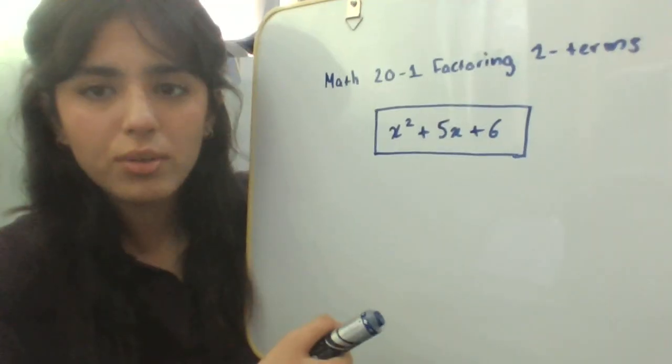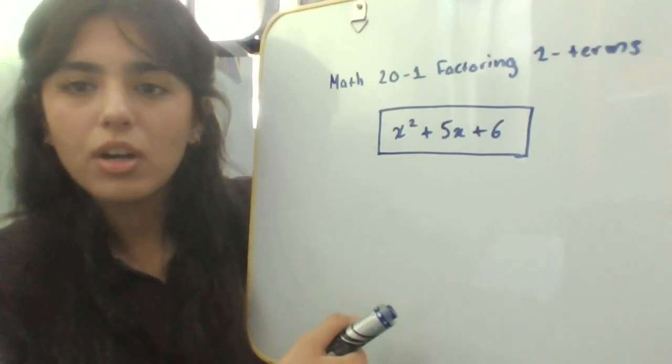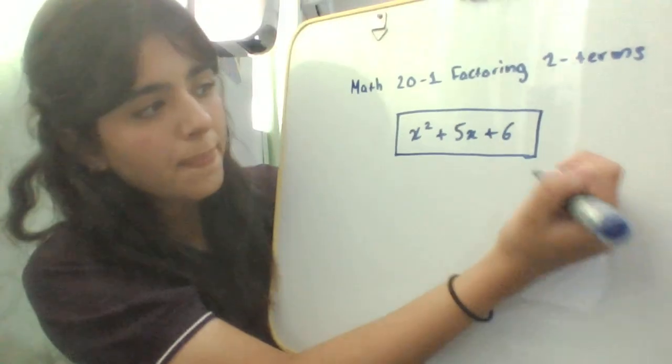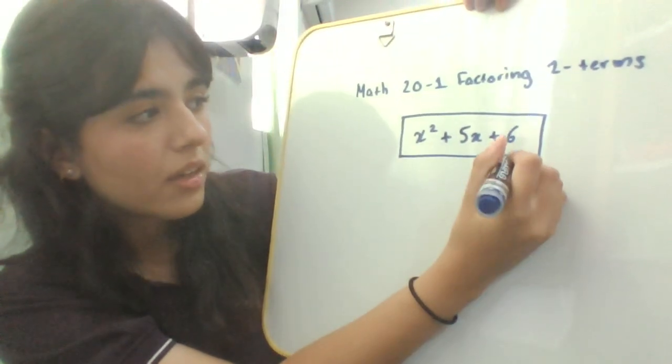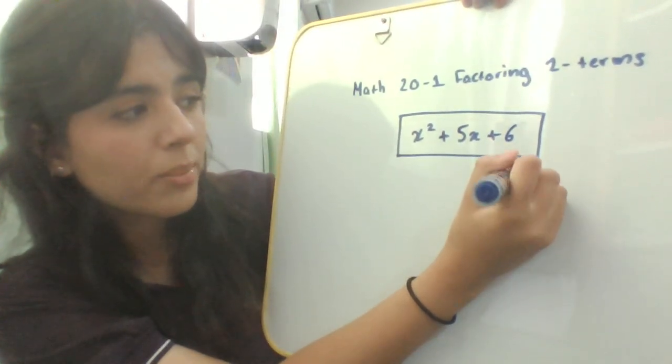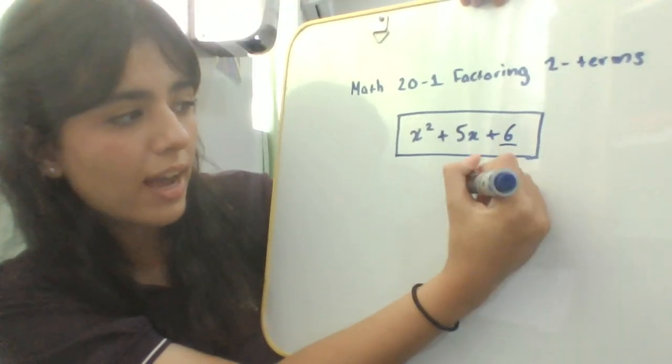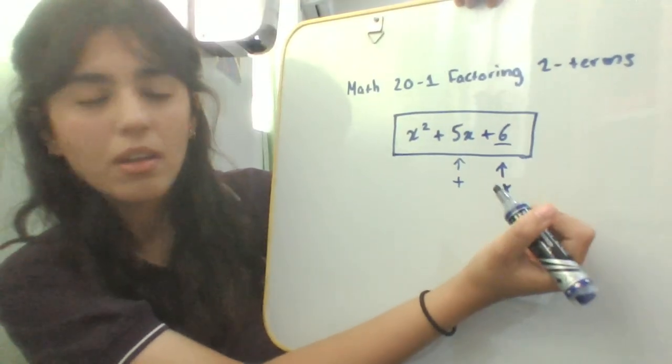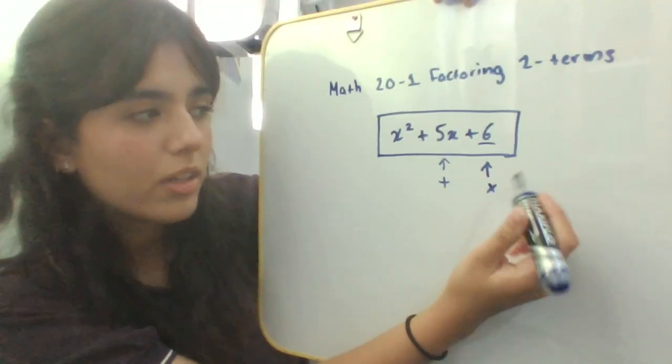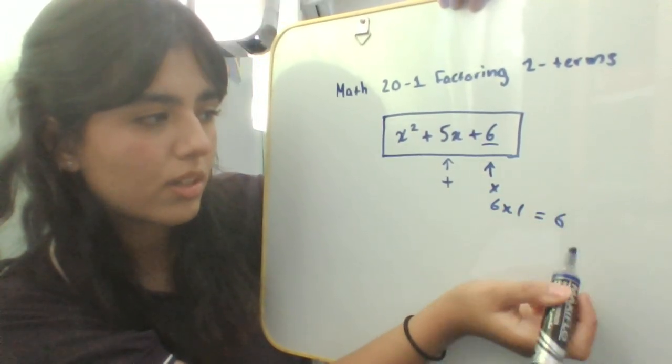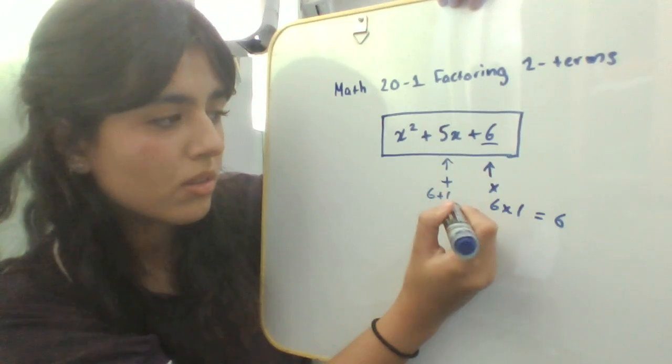Now we're going to move on to three-term examples. These are a little bit harder but they're quite simple once you understand how to do them. You want to remember that you are going to pick two numbers that will multiply to the last term and will add up to the middle term. We can try 6 times 1—that would equal 6, so that's correct, but 6 plus 1 equals 7, so that cannot be a possibility.